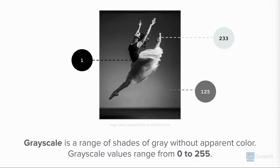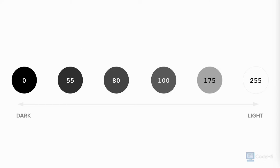Let's begin our color journey by looking at grayscale images. Grayscale images contain pixels colored with different shades of gray, which have no apparent color. A grayscale value can be represented by a single value of 0 to 255, from black to white. The smaller numbers closer to 0 represent the darker shade, or black.